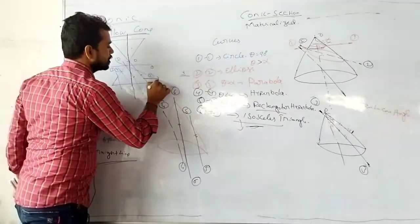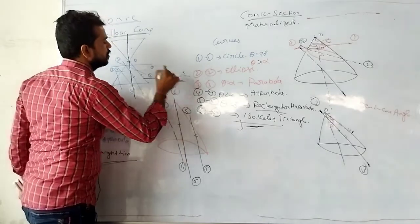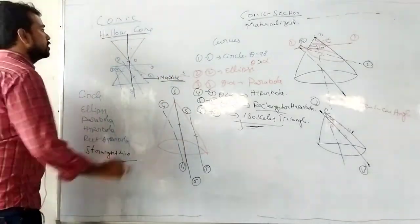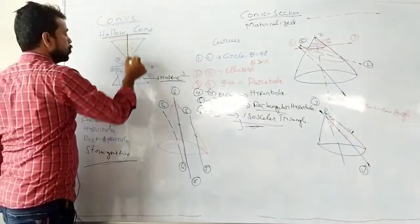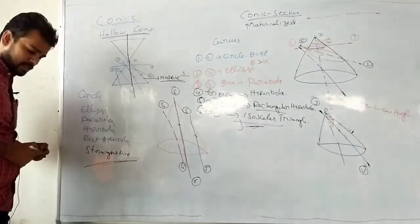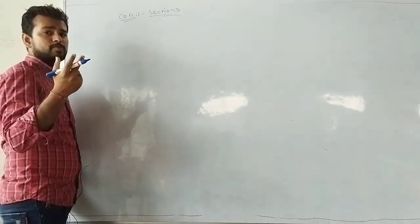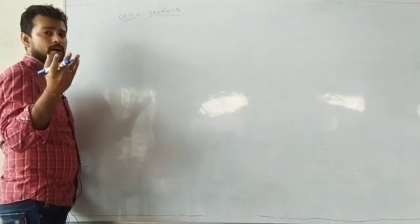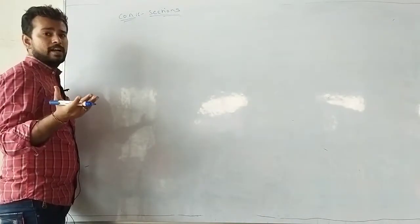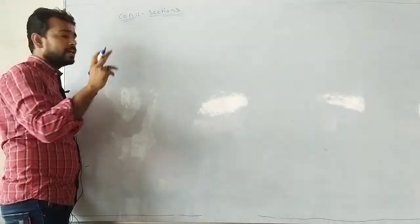One of the two cones in a conic is known as a nappe. From conic sections, the curves you get are: circle, ellipse, parabola, hyperbola, and rectangular hyperbola. In a conic section you get an isosceles triangle; in a conic you get a straight line.